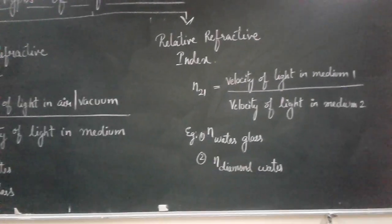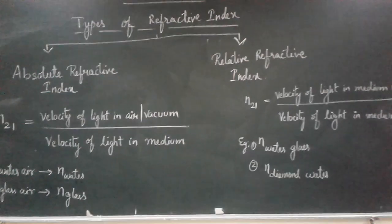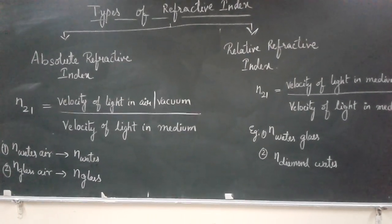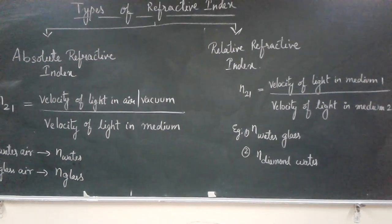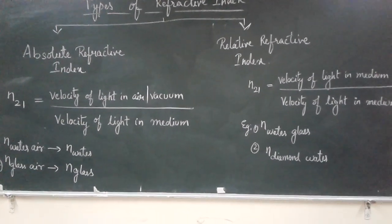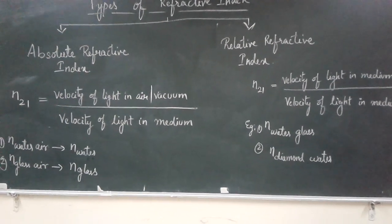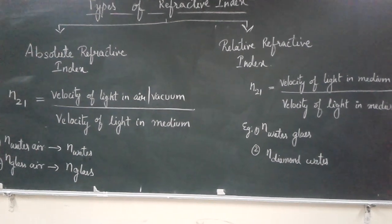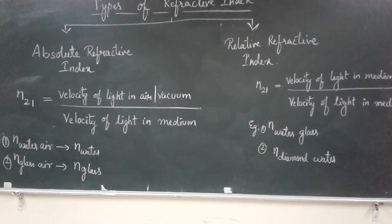So whenever refractive index is calculated between any two media, it is known as relative refractive index. And when the refractive index is calculated with one medium being air or vacuum, then it is known as absolute refractive index.